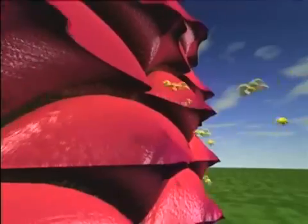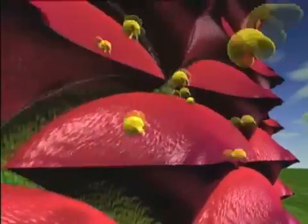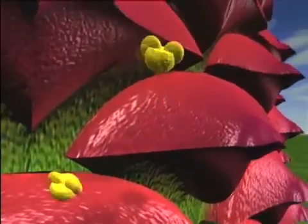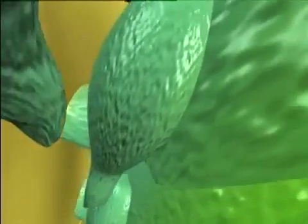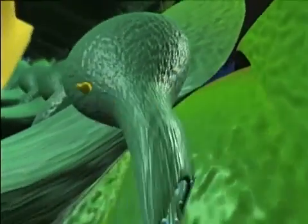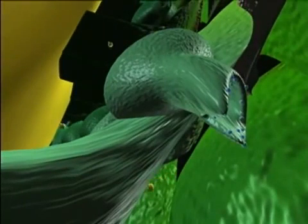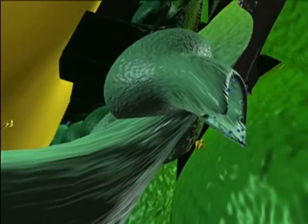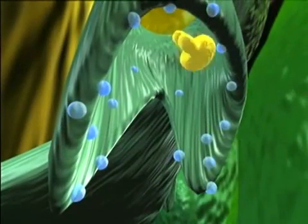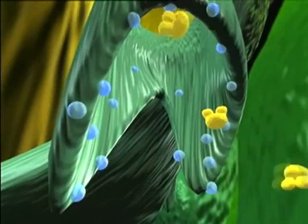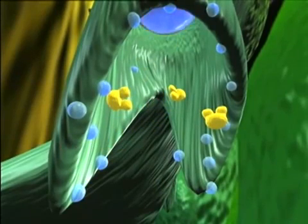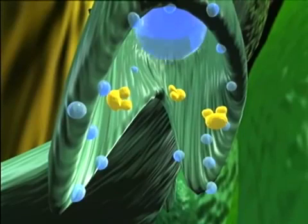Carried by air currents, some pollen grains are forced between the ovuliferous scales and fall down towards the ovules. Some of the pollen grains adhere to the sticky surface of the micropilar arms.